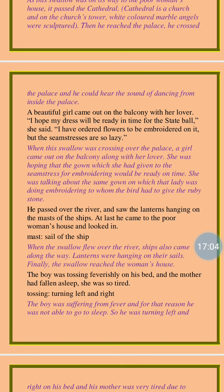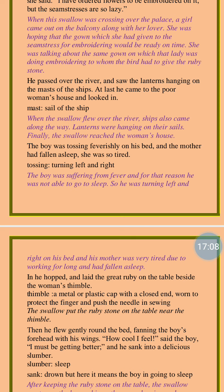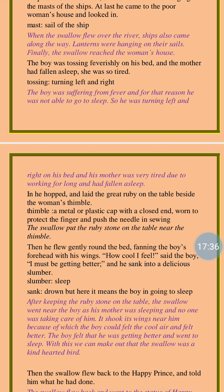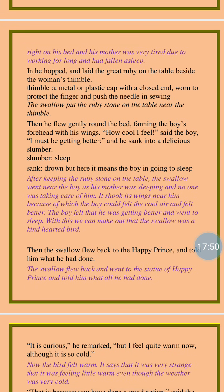He passed over the river and saw the lanterns hanging on the mast of the ship. At last he came to the poor woman's house and looked in. Ships also came along the way as he flew over the river, and ultimately he reached the poor woman's house. The boy was tossing feverishly on his bed — suffering from extreme fever — and the mother had fallen asleep, she was so tired. He hopped in and laid the great ruby on the table beside the woman's thimble.